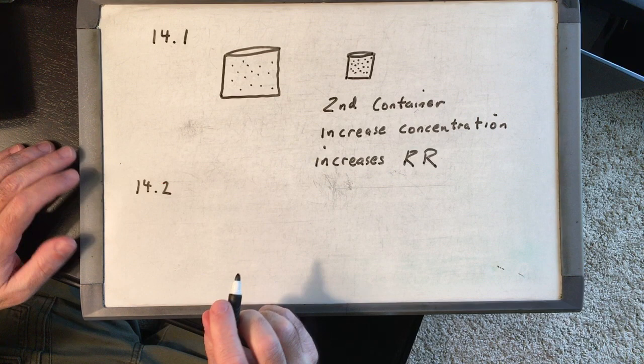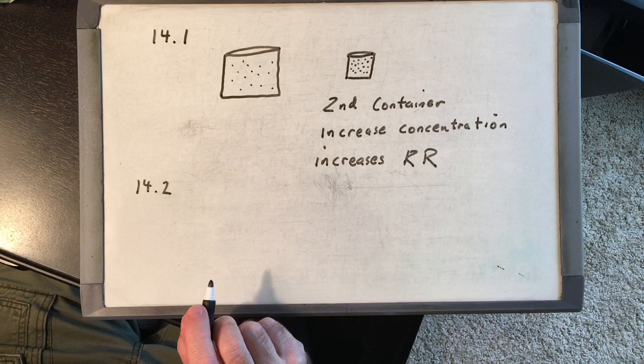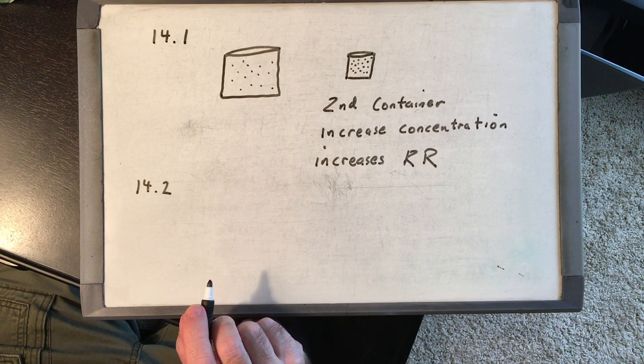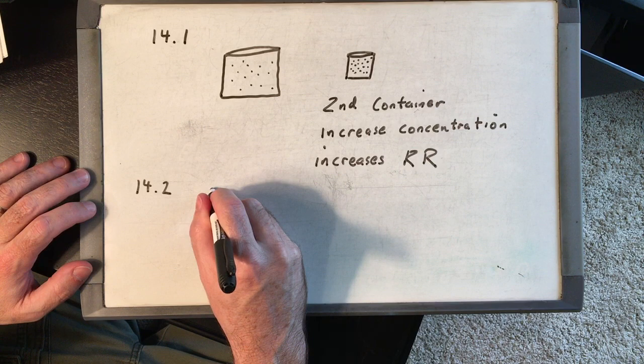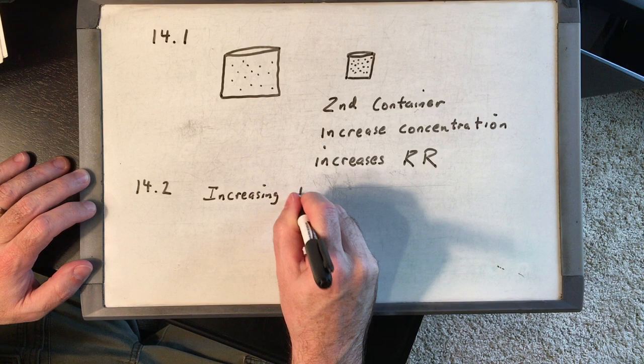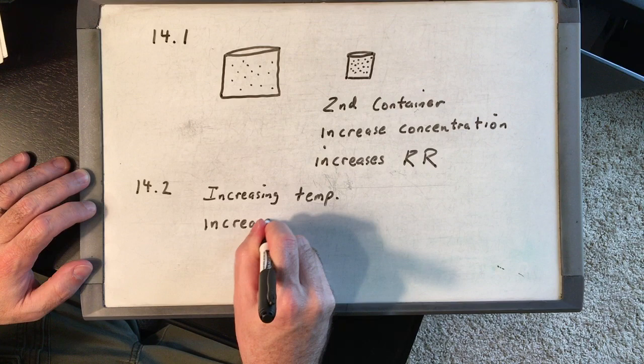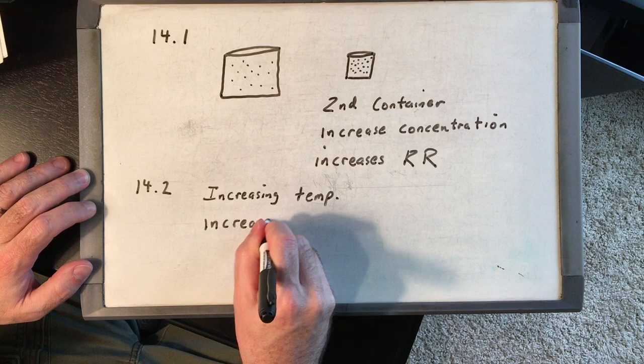14.2: The muscles in an animal's body are run by chemical reactions; when these reactions occur, they contract the muscle. A biologist studying a lizard notices that in a cold place it moves very slowly, but in a warm place it moves very quickly. Explain this in terms of chemical kinetics. The answer is factor one — temperature. Increasing temperature increases the reaction rate.